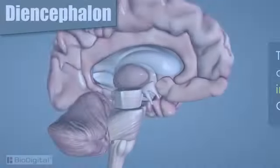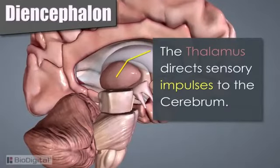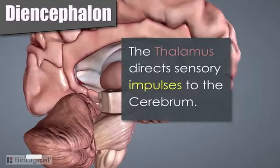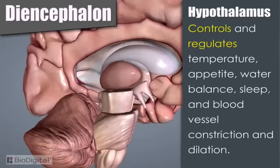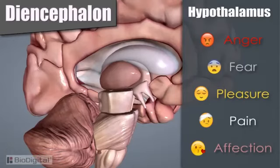The thalamus acts as the relay center for sensory impulses, except the sense of smell. The hypothalamus functions in maintaining homeostasis, such as regulating blood pressure, body temperature, feeding activities, emotions, and fight-or-flight responses. It also serves as a link between the nervous and endocrine systems.